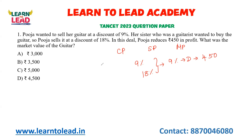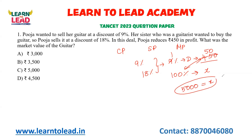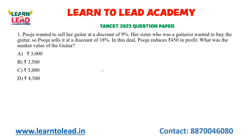The market value of the guitar — what is the market price of the guitar? The difference between a 9% discount and an 18% discount results in 450 rupees less profit. So 9% of the market price equals 450 rupees. Therefore, if 9% equals 450, then the market price equals 450 divided by 9 multiplied by 100, which gives 5,000. Market value of the guitar is 5,000. Keep in mind that questions based on profit and loss are common. Now let us move to the next question.